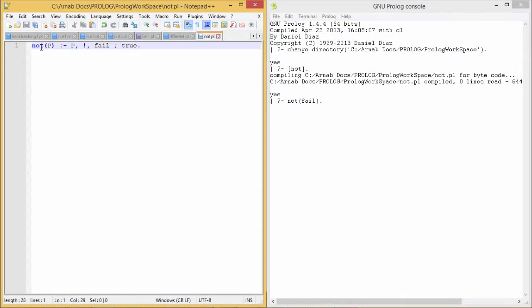Here is the respective code for us: not of p, if p and cut and fail or true. So now let me execute the code. My program has got compiled and now existing in the memory. Here, my clause name is not. So I have written this query for execution.